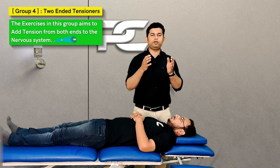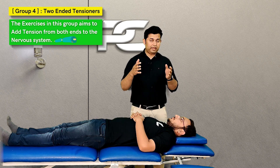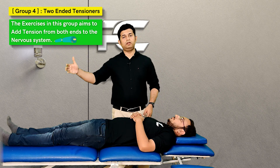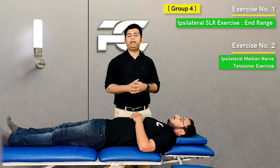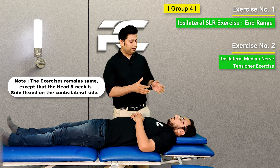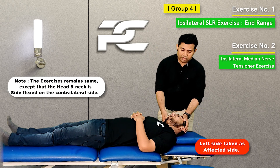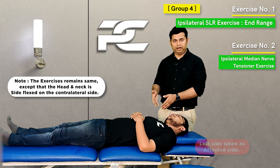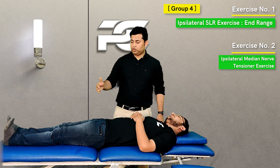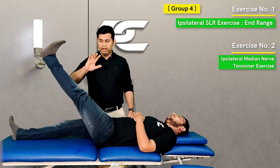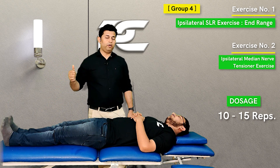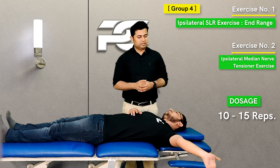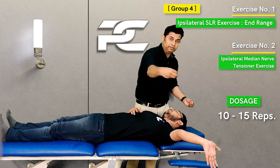The fourth group of exercises are known as the two-ended tensioners. Here, the intention of the therapist is to add tension to the nervous system from both ends — from the cervical end as well as from the distal upper and lower limb end. The exercises are the same as the one-ended tensioners except that before performing them, the therapist asks the patient to keep the head and neck in contralateral lateral flexion. To treat left-side cervicogenic headache, the head and neck remain in right-side lateral flexion, from where the patient performs ipsilateral SLR with ankle dorsiflexion to end range, holding for two seconds and returning — 10 to 15 repetitions — then ipsilateral median nerve tensioners, holding the end range for two seconds. Here we are tensioning the nervous system at both ends.